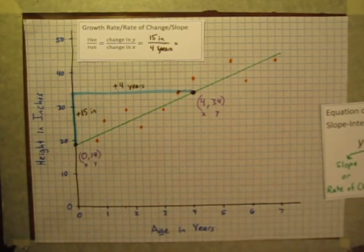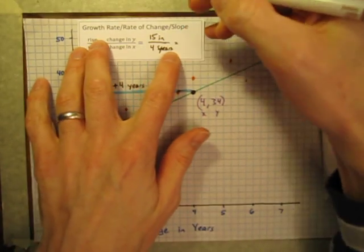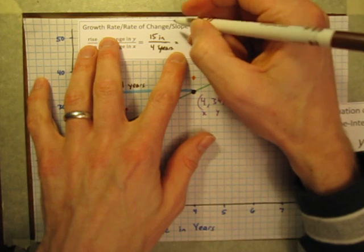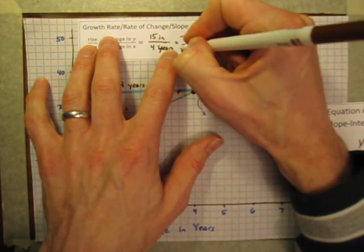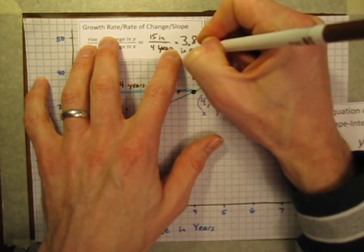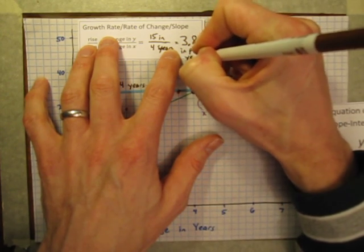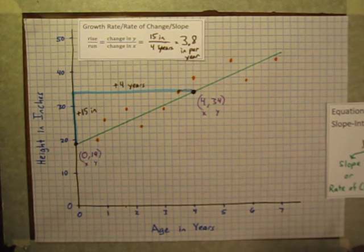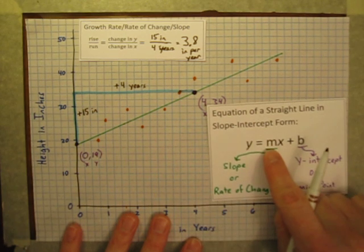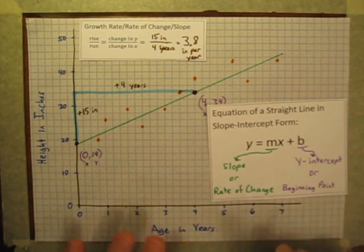And so I know these children are growing an average of 15 inches every 4 years. What is that per year? Well, 15 inches divided by 4 years. If you figure that out, round it to the nearest tenth, you get about 3.8 inches per year. So that's going to be my slope or rate of change. The growth rate of these children, the m, is 3.8 inches per year.